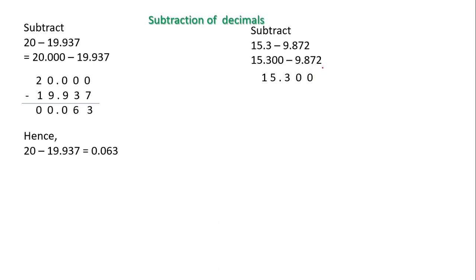I take the second number and arrange it below the first according to place names: 9 is in ones, so I write 9 in ones, decimal point below the decimal point, 8 in tens, 7 in hundreds, 2 in thousands.